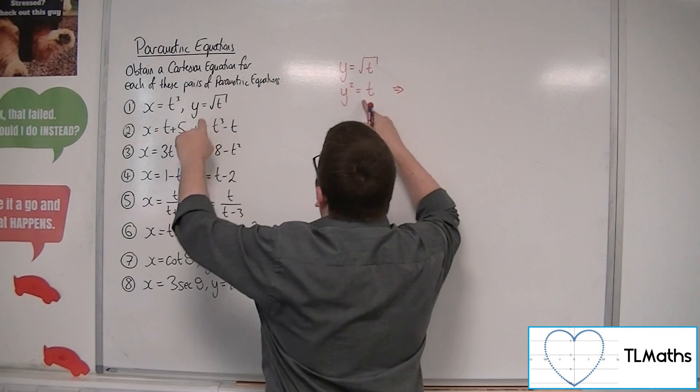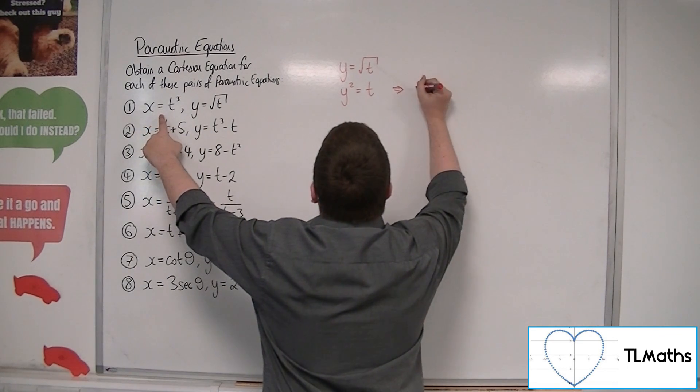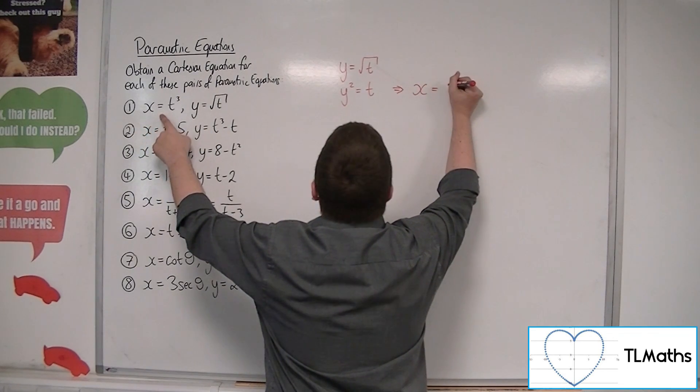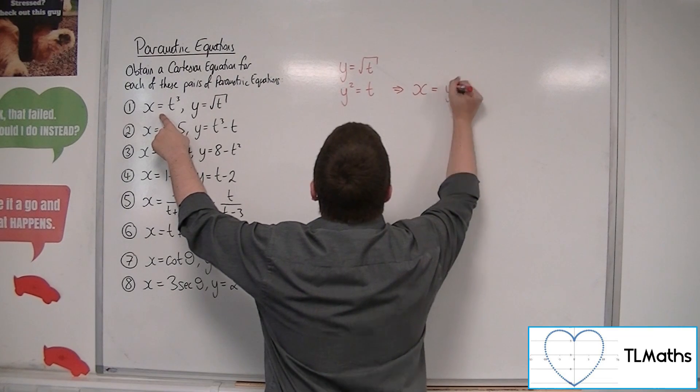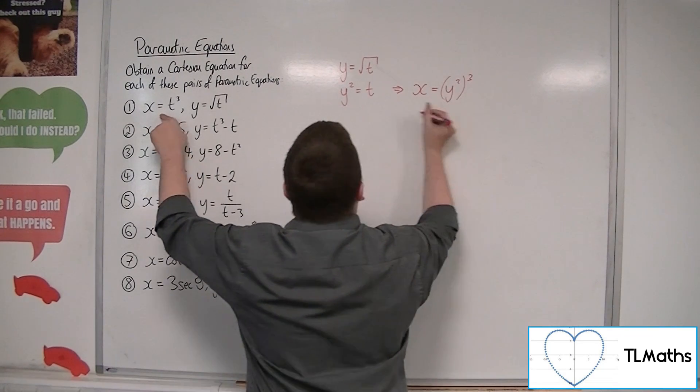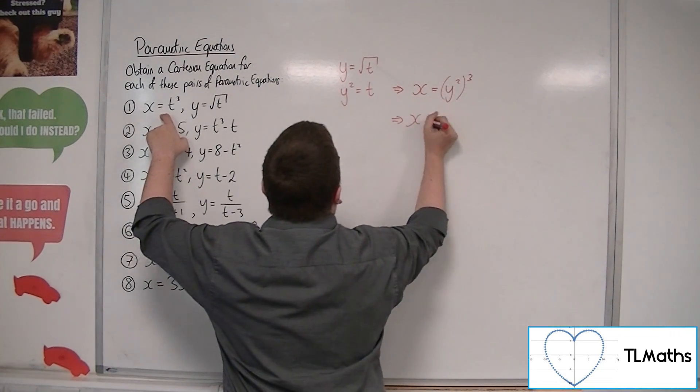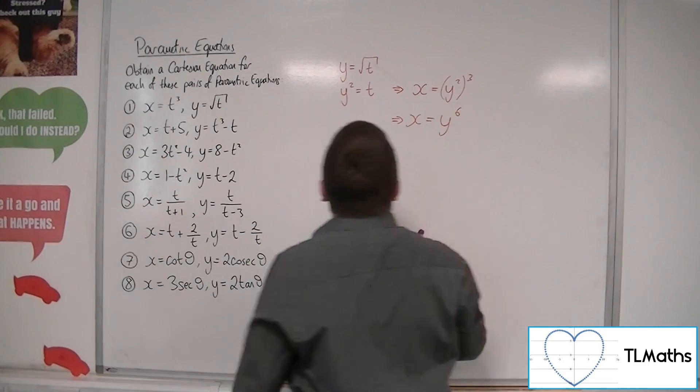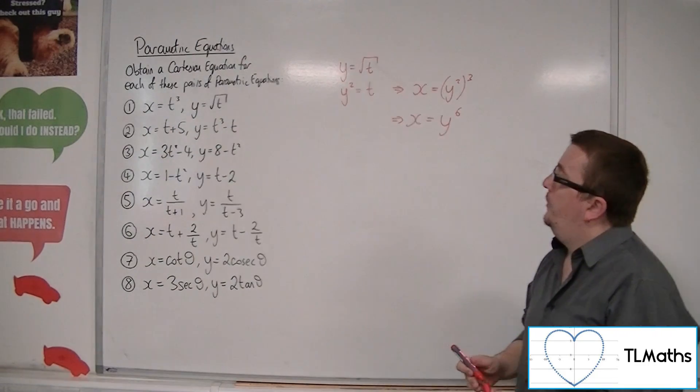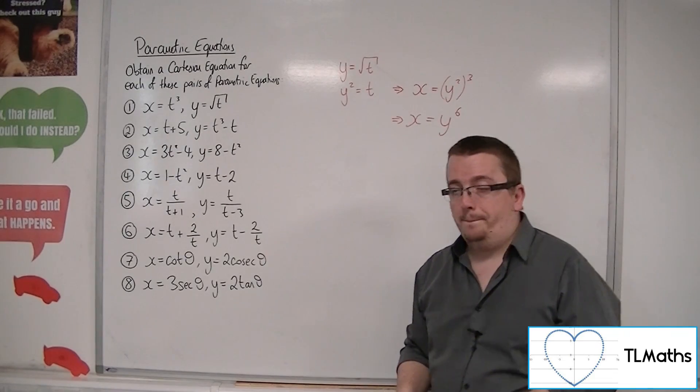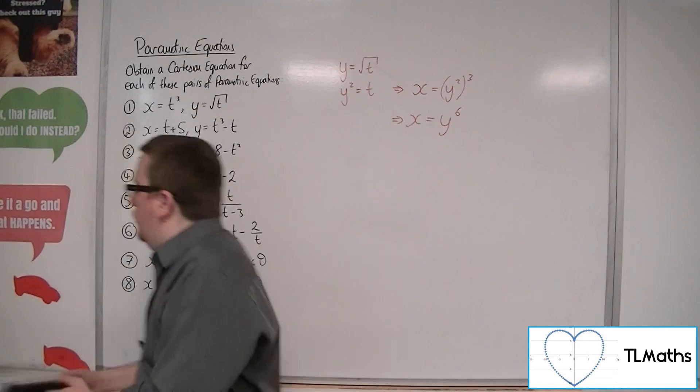You could then substitute that into this equation, and so I'd have x is equal to t cubed, so y squared cubed. And so you could say that x is equal to y to the 6th, and there is a Cartesian equation that represents number 1.